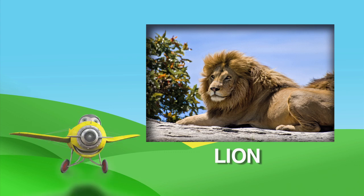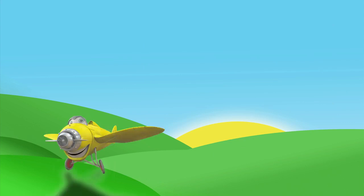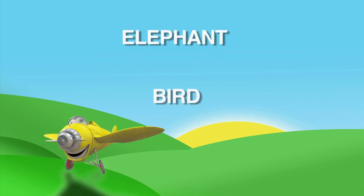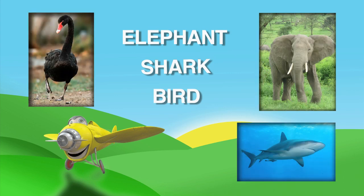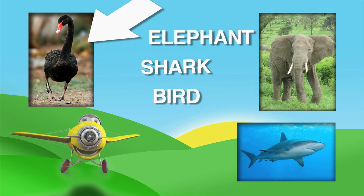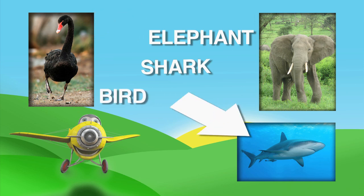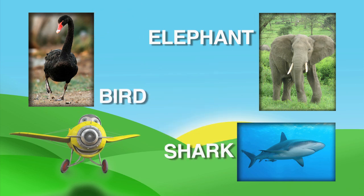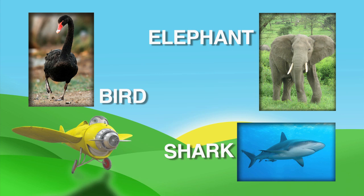Do you remember what a bird, elephant, and shark look like? Let's match the names with the pictures. This picture is the elephant. This picture is the bird. And this picture is the shark. Did you get them all right? Nice job! I knew you could do it!